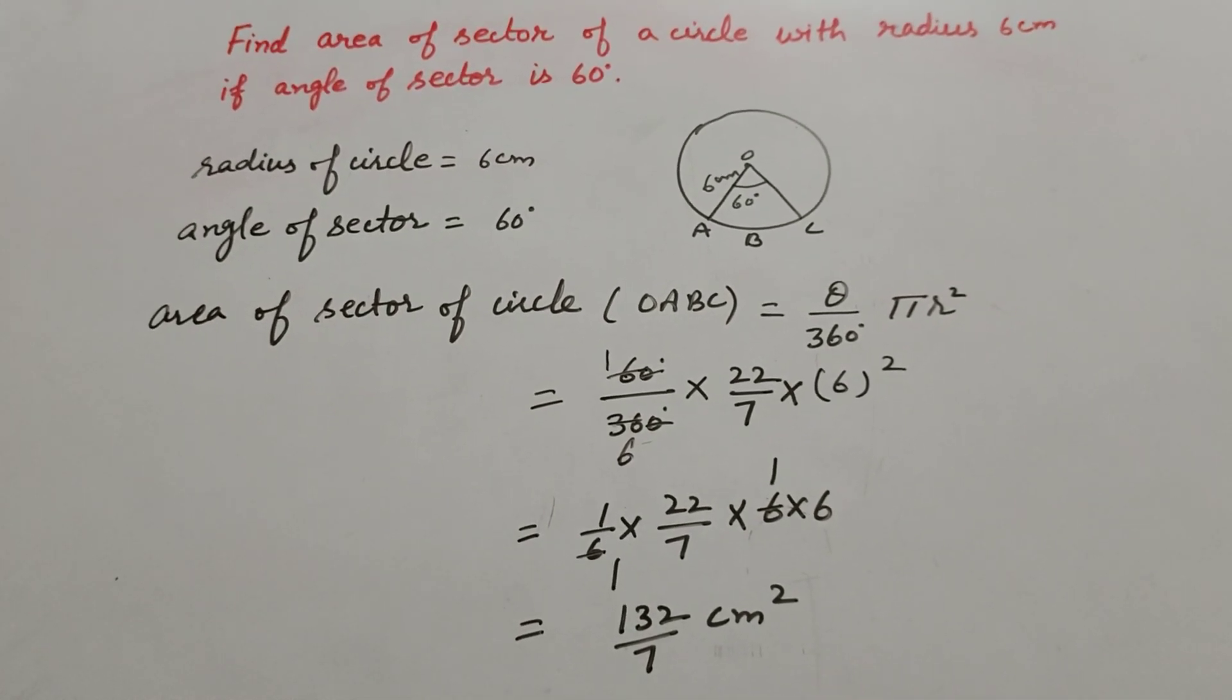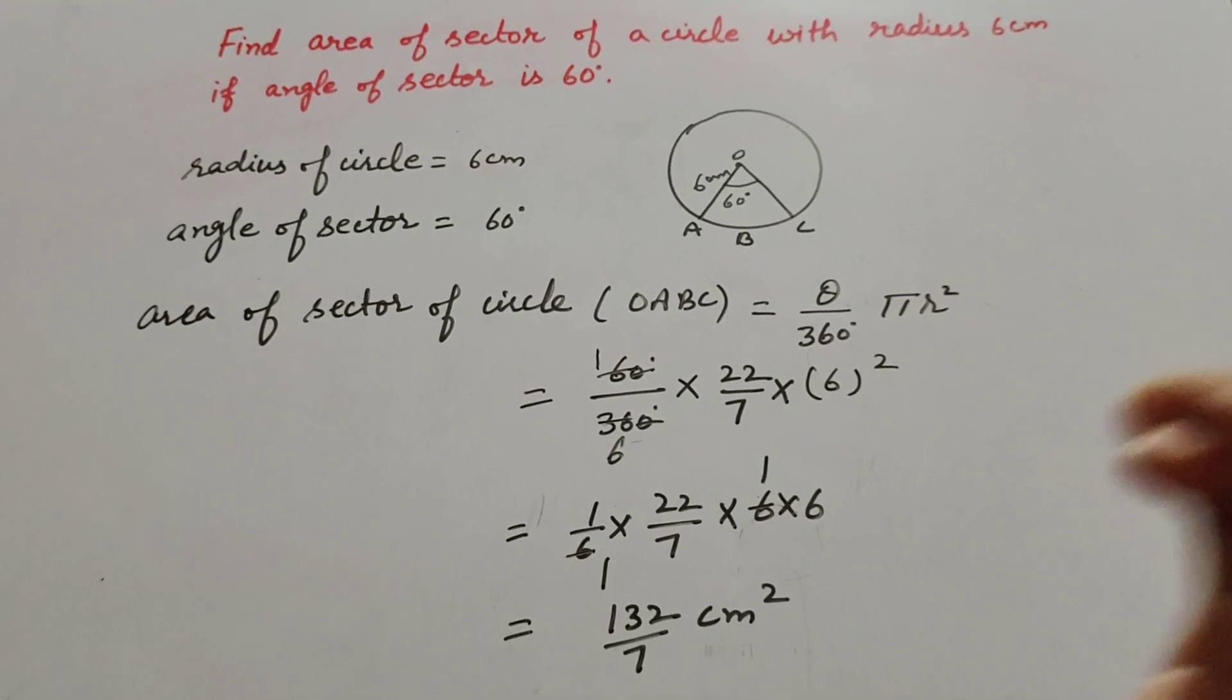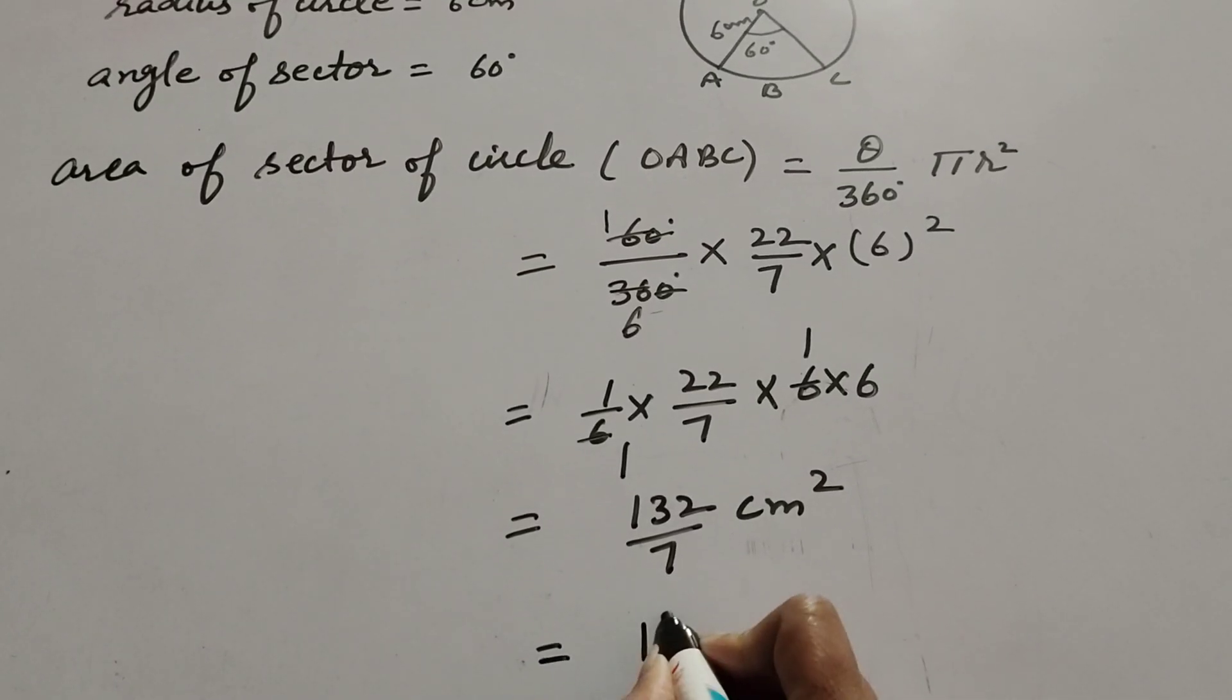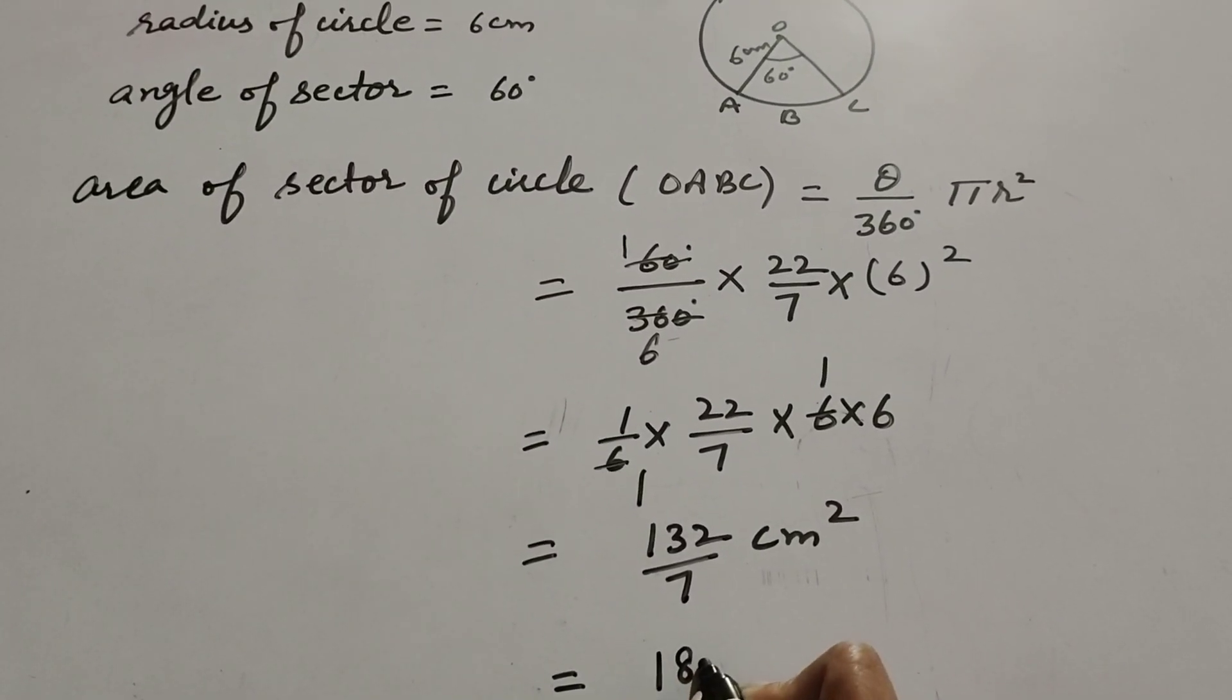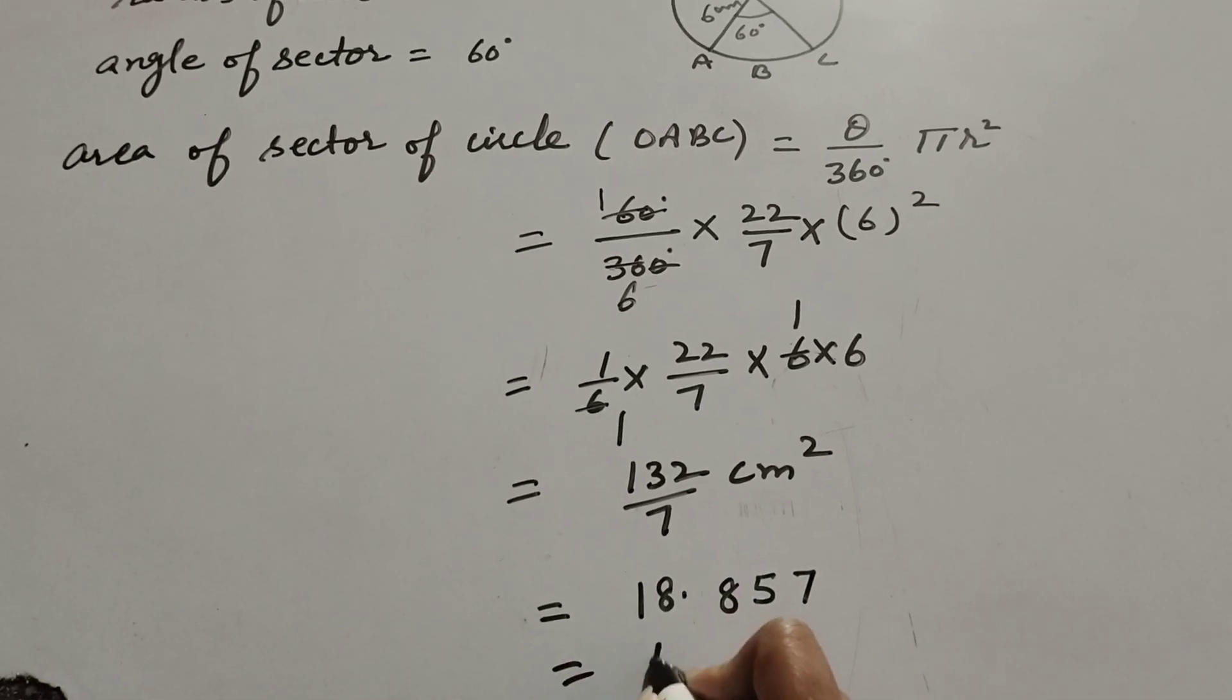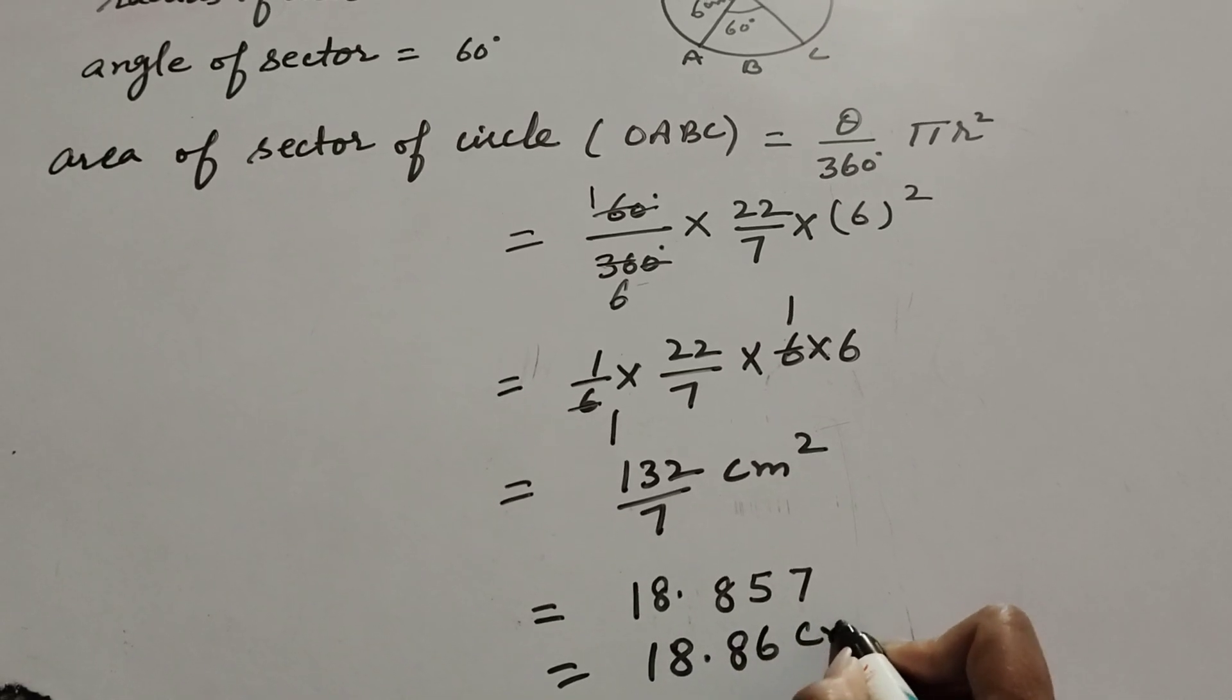This is the answer but we also change this answer into the decimal numbers. So 132 divided by 7, we get answer 18.857 and we also write it as 18.86 cm square.